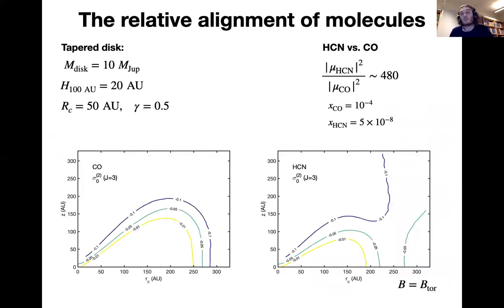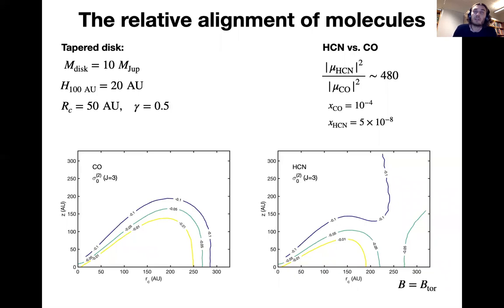Now I will show some estimates we made with PORTAL to quantify the emergent polarization fraction and polarization maps of some molecular lines. The simulations are performed on a tapered disk model of 10 Jupiter masses, and the molecular abundance profiles are chosen to be constant throughout the disk.